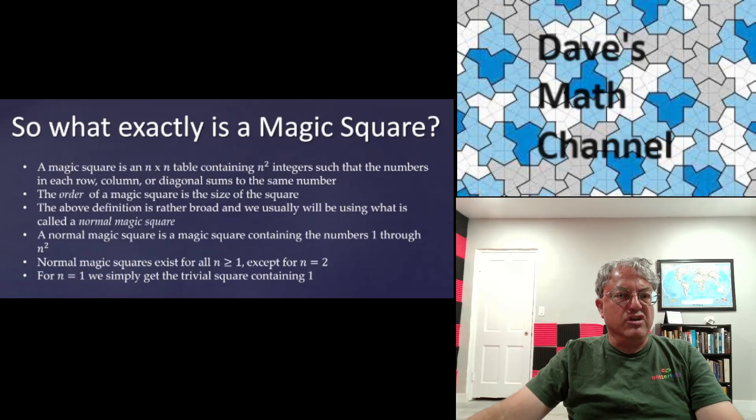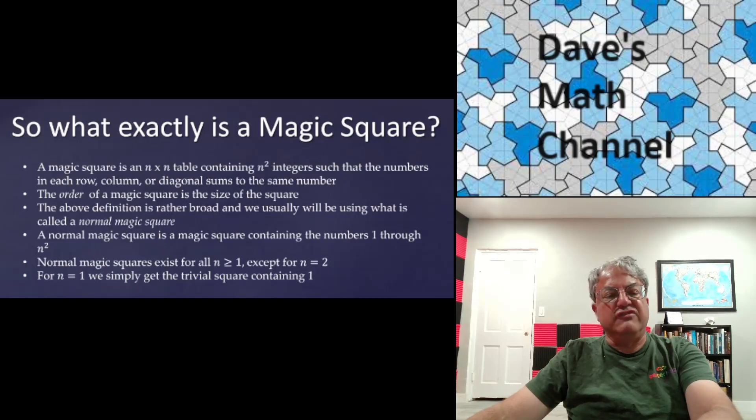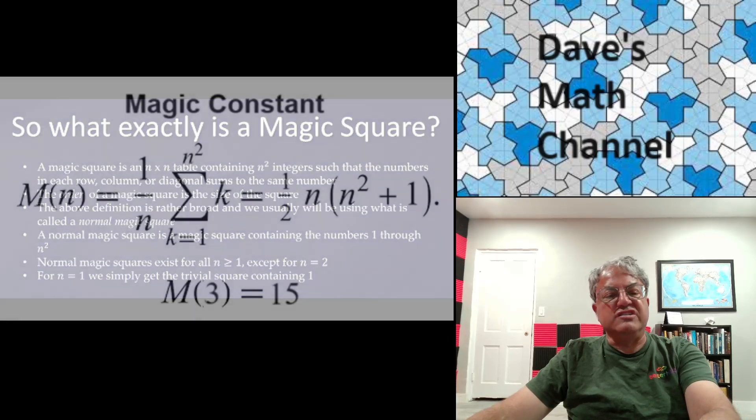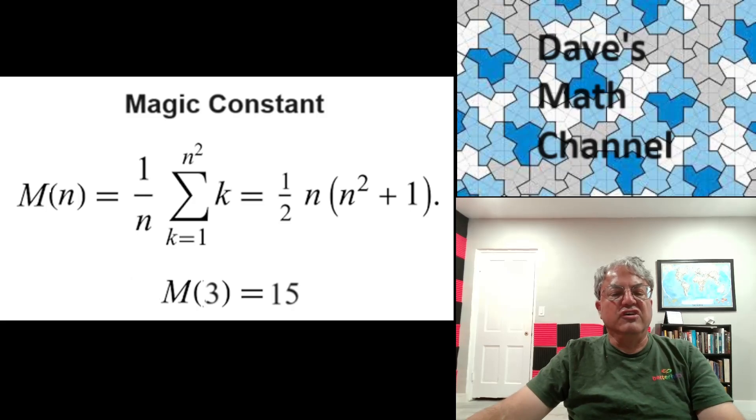And not only that, but every row, every column, and each of the two long diagonals have to add up to the same number. And that number is called the Magic Constant. And it's pretty easy to figure out what the Magic Constant is for a given n greater than or equal to 3.